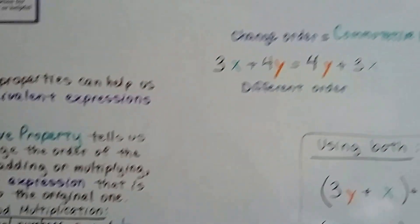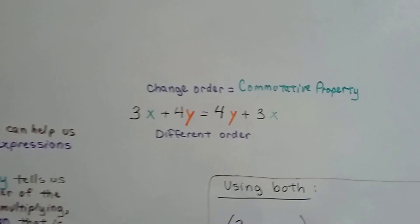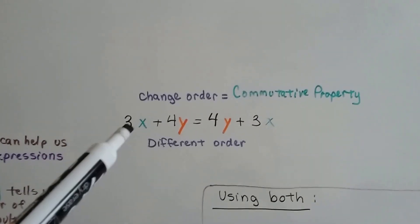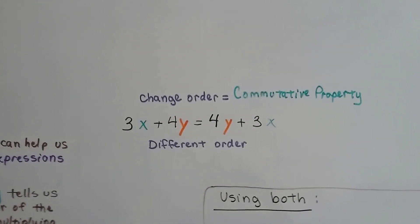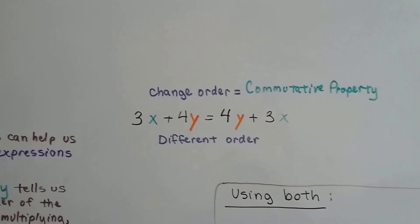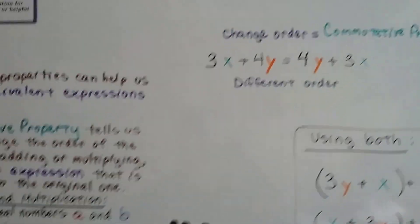When you change the order for the commutative property, 3x is first, now 3x is last. See? It's just a different order. It's the commute.